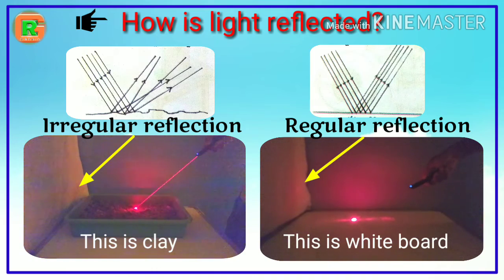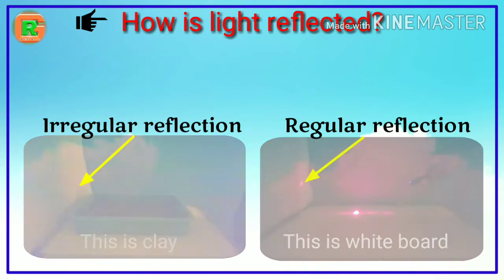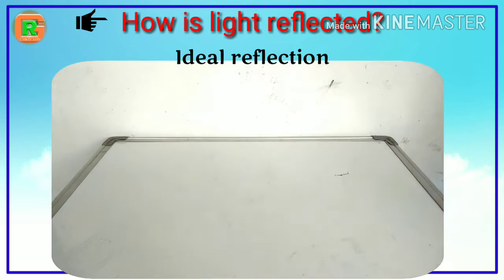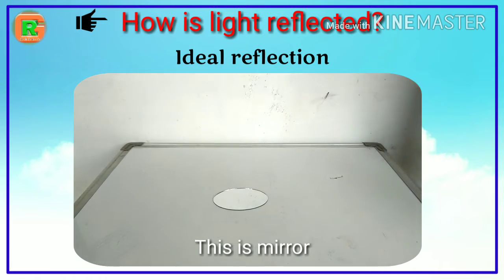If the surface of the object is very smooth or polished, then that regular reflection from it is called ideal reflection. Reflection from the mirror is the best example for ideal reflection.